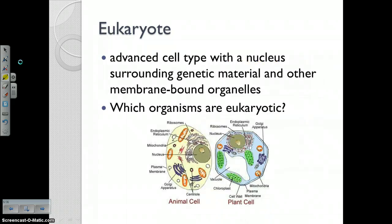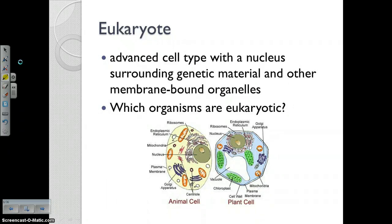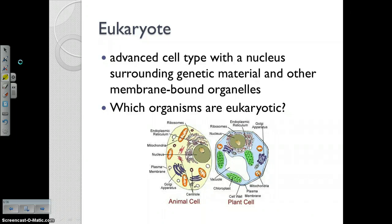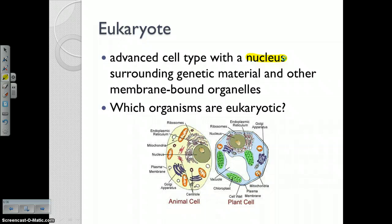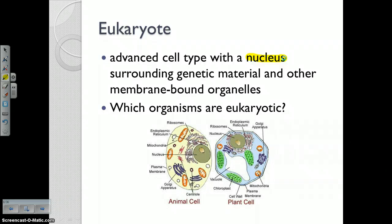Eukaryotes are everything else — protists, fungi, plants, and animals are all eukaryotes. Remember, you are an animal, so you are eukaryotic. "Eukaryote" — you. "Pro" — no. Eukaryotes' cells do have a nucleus and those other fancy organelles you probably learned about in seventh grade: mitochondria, endoplasmic reticulum, Golgi body, all of that stuff. The key here is the nucleus. Prokaryotes — bacteria — no nucleus. Eukaryotes — you, animals, plants, fungi, protists — have a nucleus. That is number seven on your notes organizer.